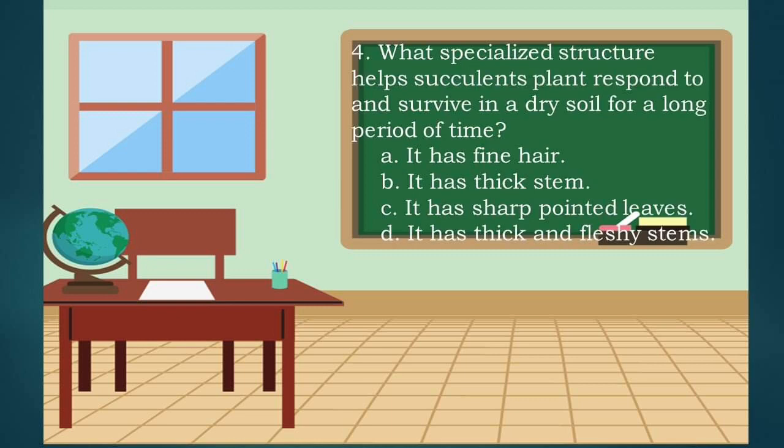Question 4: What specialized structure helps succulent plants respond to and survive in dry soil for a long period of time? A. It has fine hair, B. It has thick stem, C. It has sharp pointed leaves, D. It has thick and fleshy stems. If your answer is D, then you are correct.